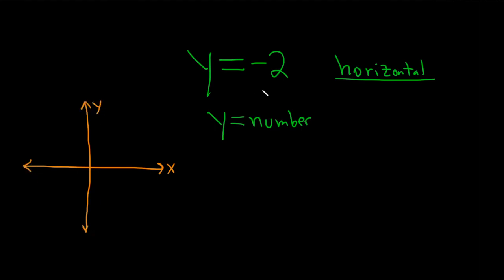And so all we do is we go down to negative 2, and then you just draw your horizontal line right here. So there it is, right there, y equals negative 2. That's negative 2. That's it.